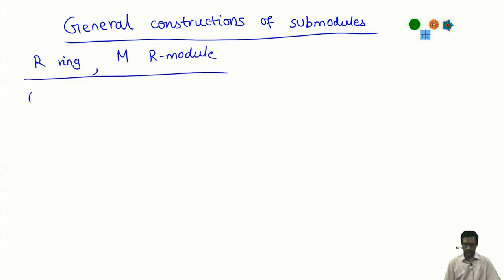Here is one thing we can do. Suppose you take a subset. This is the first general sorts of construction that one can make. Suppose S is a subset of M, no further properties, just a subset of M. Then we can define something called the submodule generated by S. This is called the submodule of M generated by S.